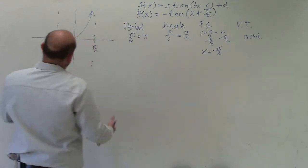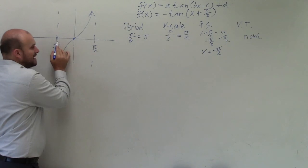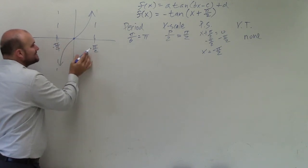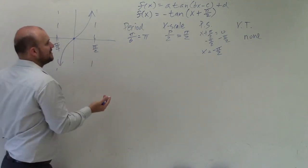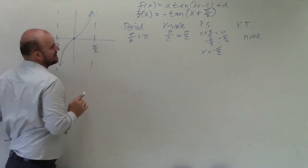OK. So notice on the initial, on our parent graph, we have a period of pi. From negative pi halves to pi halves is a period of pi, as well as the scale, the x scale, is pi halves as well.